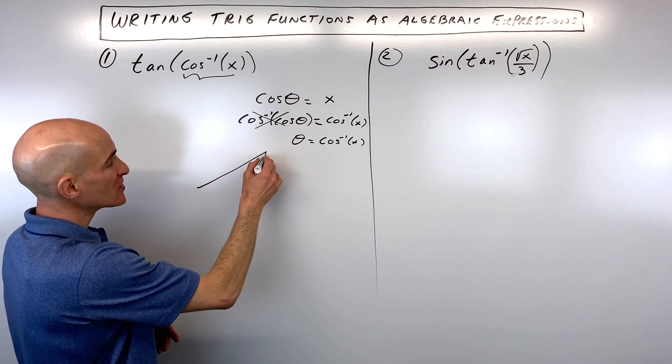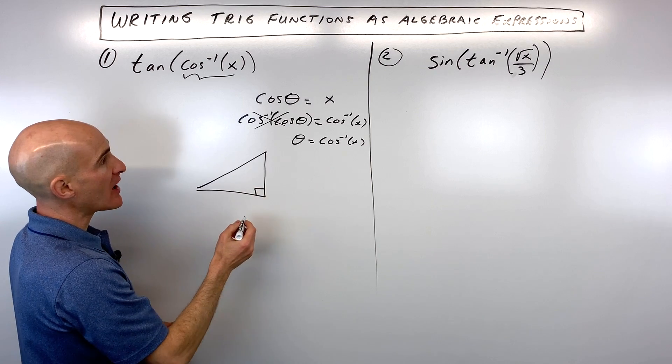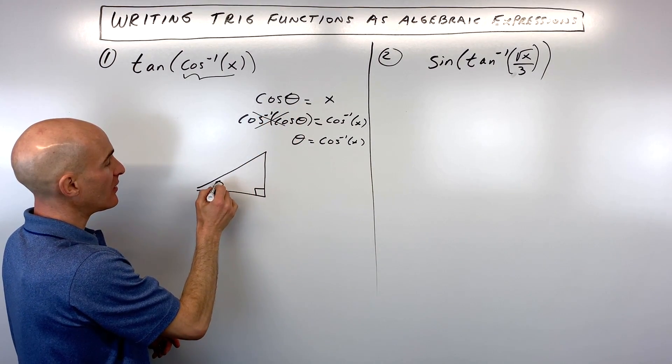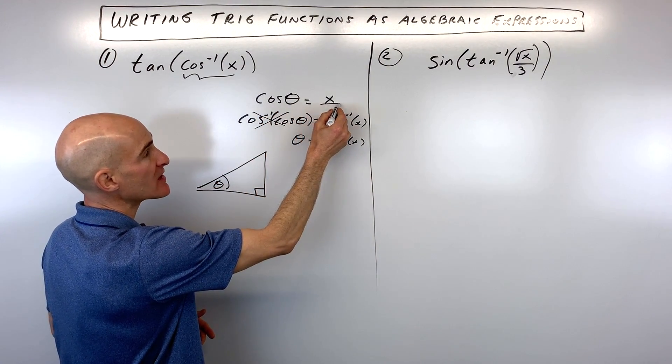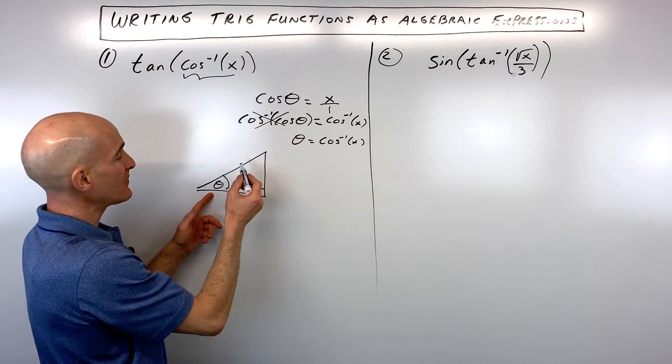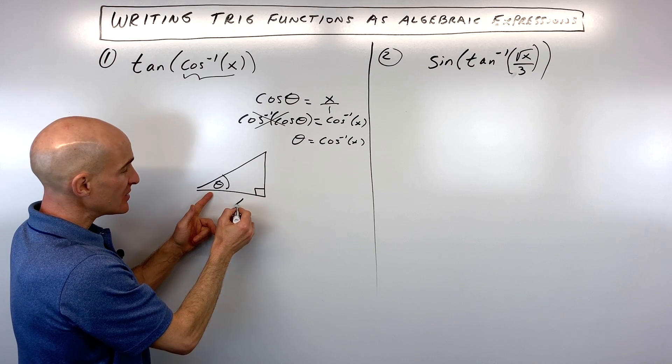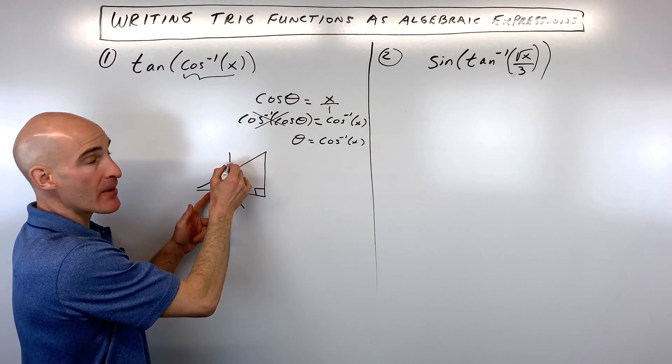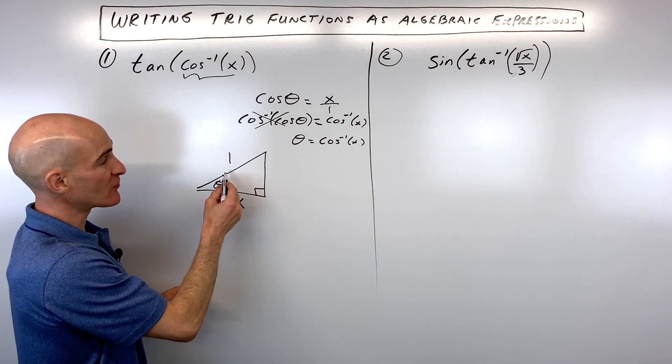But what you would do now is you would construct a triangle, a right triangle, and you're saying the cosine of theta is equal to x. Now anything can be written as a fraction by putting it over one. So you can say the cosine of theta equals the adjacent over the hypotenuse. So cosine is adjacent over hypotenuse.